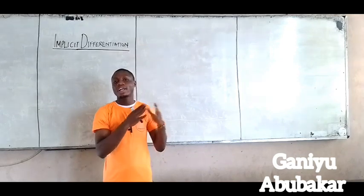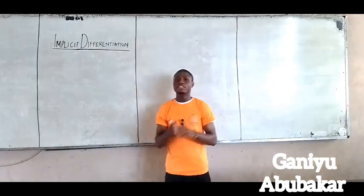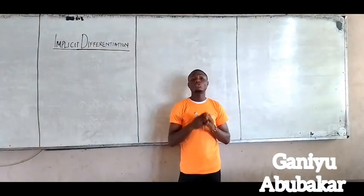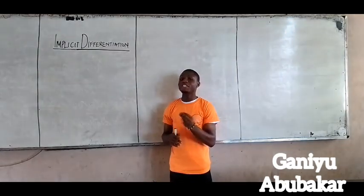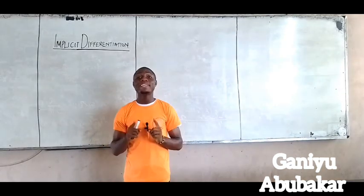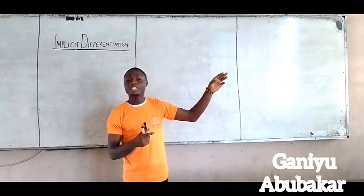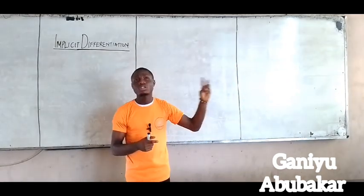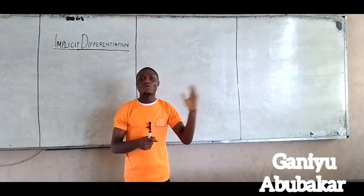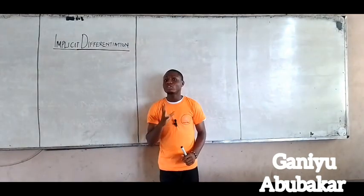Hello and welcome to Excellency Parable. For today, we need implicit differentiation. For implicit differentiation, I want to note two things. First, note that X and Y for this concept are placed together. For first principle, X and Y are not placed together. But for implicit, X and Y are placed simultaneously.